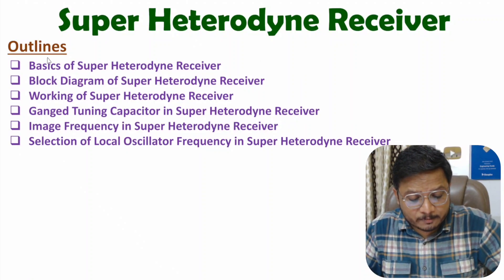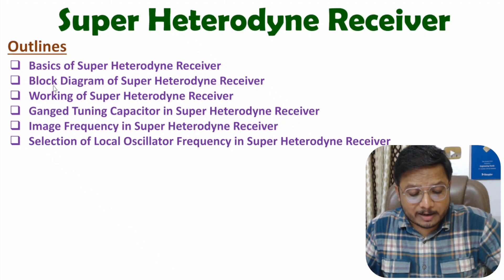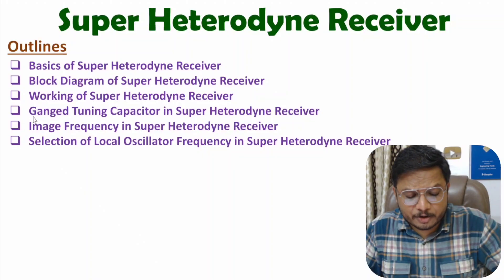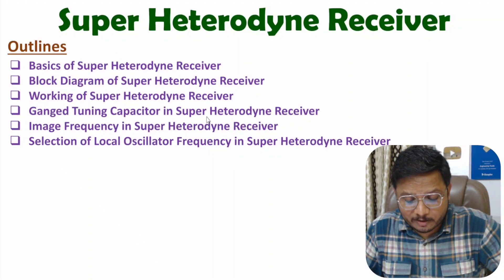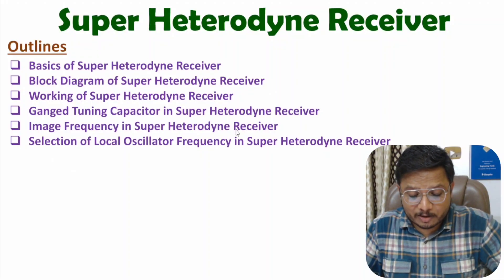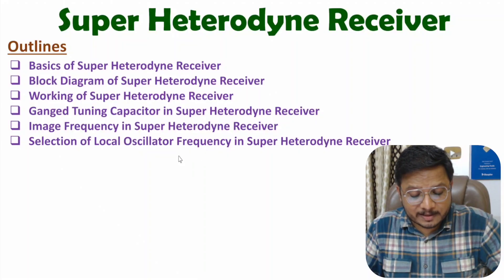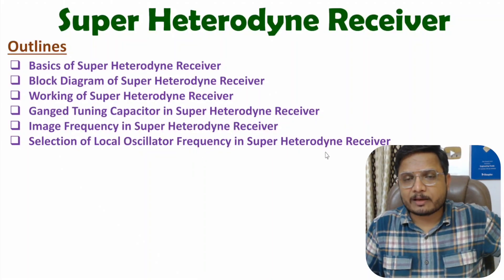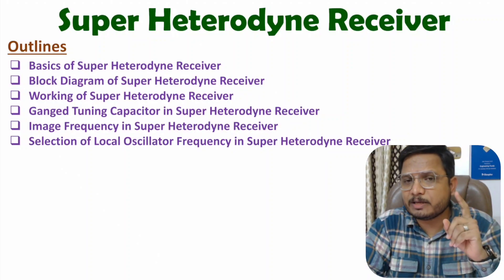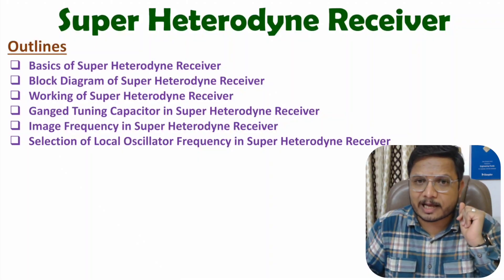First, I will discuss the basics of the super heterodyne receiver. After that, I will explain the block diagram and working of the super heterodyne receiver. After that, I will explain the ganged tuning capacitor, then image frequency, and finally the selection of local oscillator frequency in the super heterodyne receiver. Based on this video, there can be many questions in university and competitive examinations, so I request you to watch this video till the end.